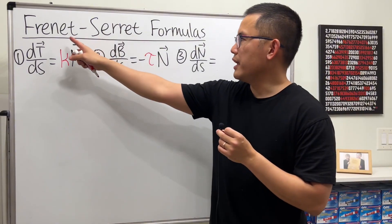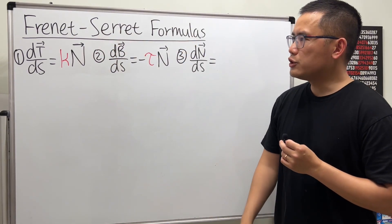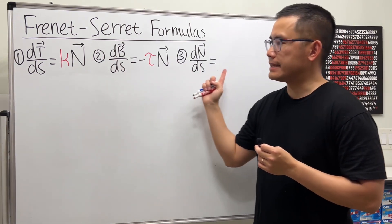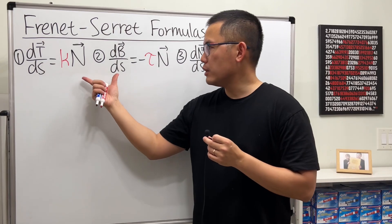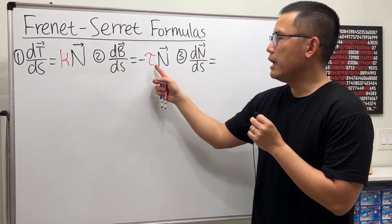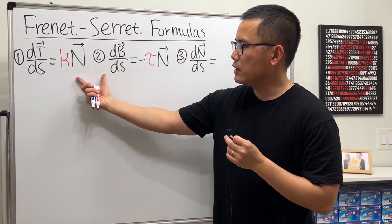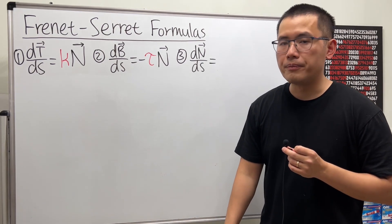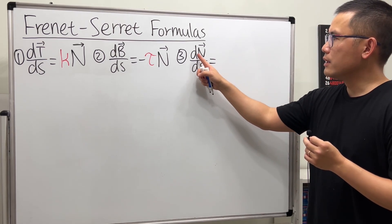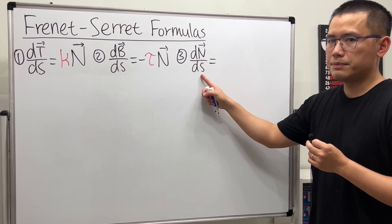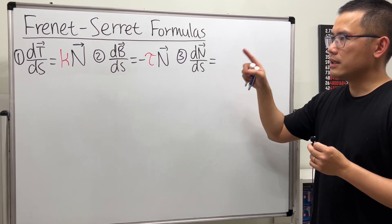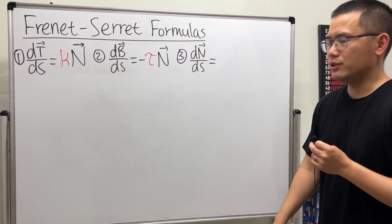Today we are going to talk about these three Frenet-Serret formulas, which are just the derivatives of the T, N, B factors with respect to s. We have already done videos for two of these, because they come from the definition of curvature kappa and torsion tau — I will have the links in the description. Our goal today is to figure out a formula for the derivative of the unit normal vector with respect to s, which will involve both the T and B vectors.